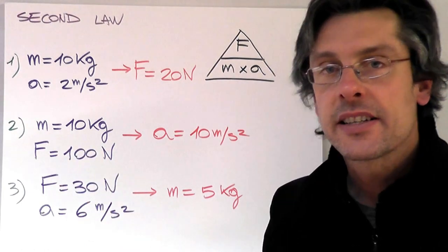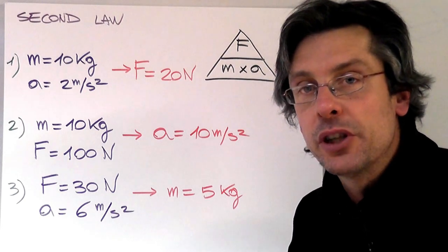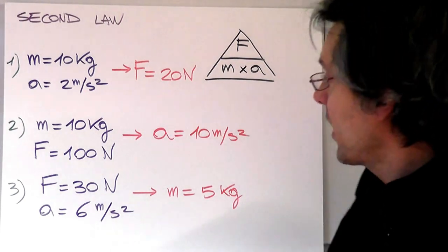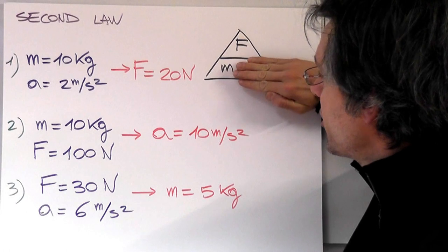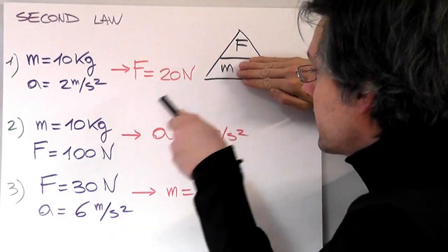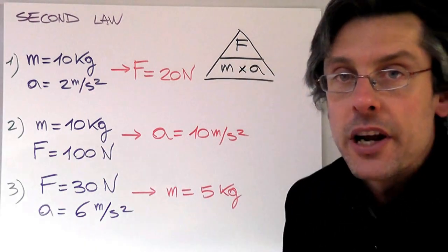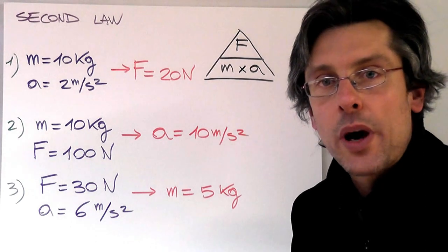In the second example, I have a mass of 10 kilograms, I have a force of 100 newtons. I want to find the acceleration, I'm going to cover the acceleration. As you can see, it's force divided by mass, 100 divided by 10, gives me an acceleration of 10 meters per second squared.